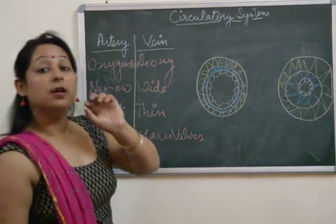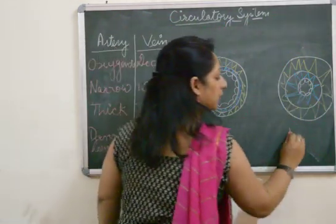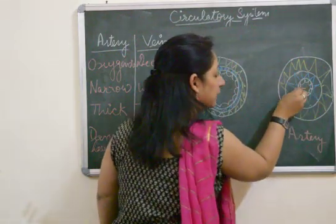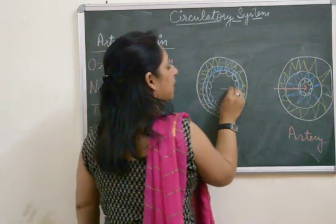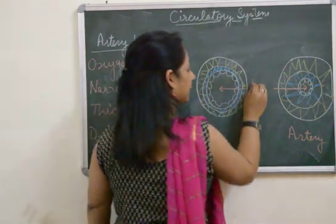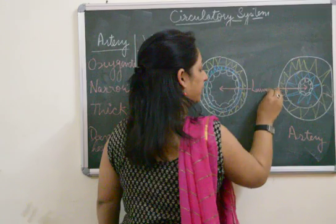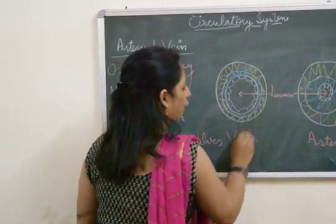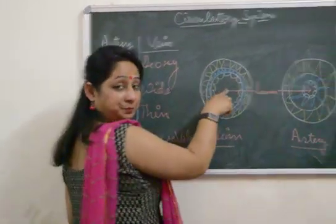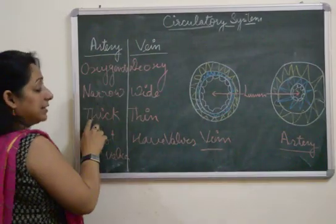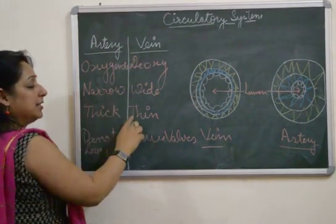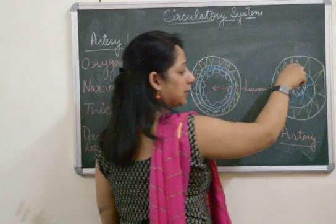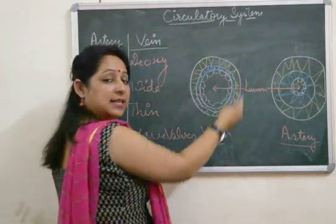First, arteries have a narrow lumen. The lumen is the opening of the blood vessel — so the artery has a narrow lumen, whereas the vein has a wide lumen. The next point is that arteries have thick muscular walls, whereas veins have thin muscular walls.